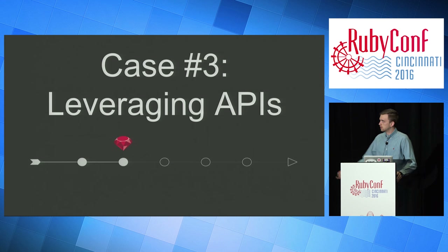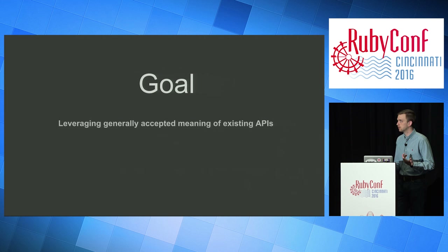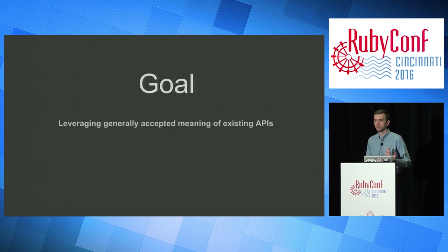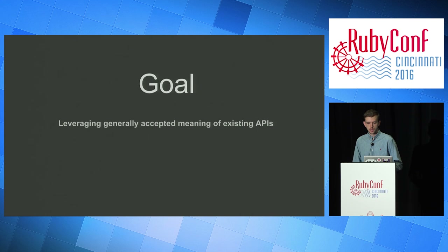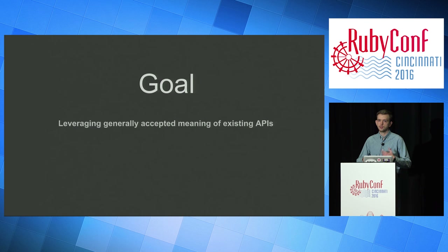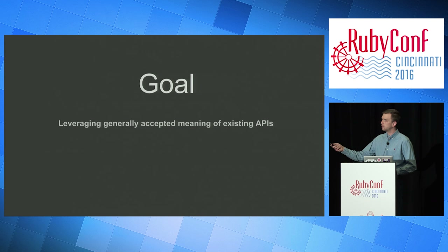Case number three is leveraging APIs. Our goal is leveraging the generally accepted meaning of existing APIs. Every time you use Ruby, you're using the public interface that Matz created to solve problems. In a way, you're inheriting his design. Whenever you inherit code elsewhere, you're inheriting their design, and you have to decide whether you're going to change the meaning of the design you've inherited, keep the generally accepted meaning, or leverage it.